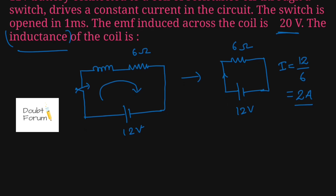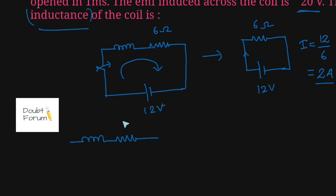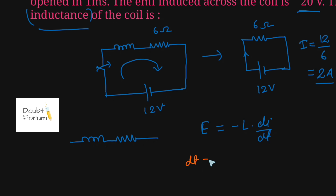A coil consists of an inductor as well as a resistor. In ideal cases the resistance is zero, but for practical purposes each coil has certain resistance. The voltage induced across the inductor is given by e = -L(di/dt). This is the basic formula we will use. Since the switch is opened in one millisecond, the value of dt is one millisecond.